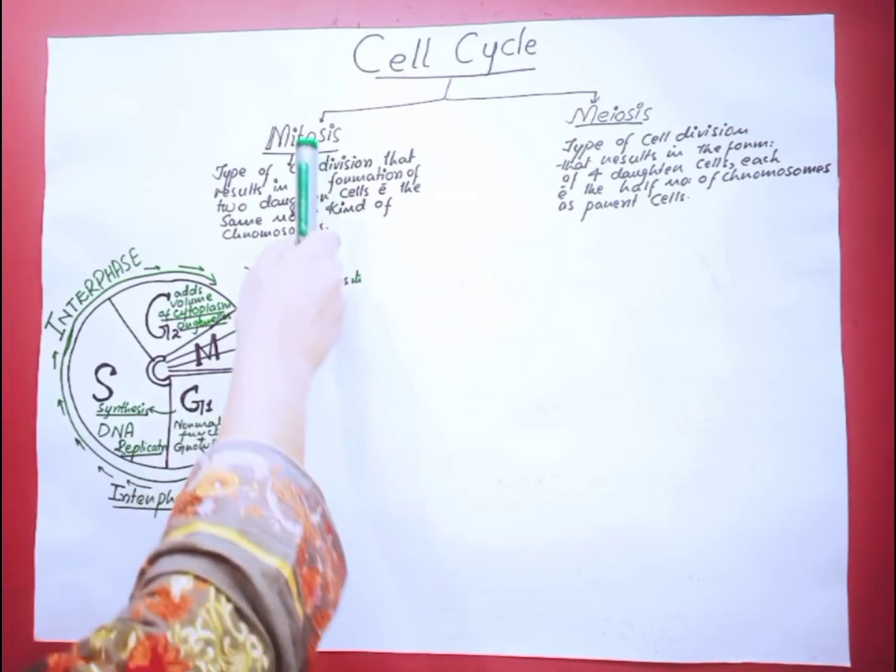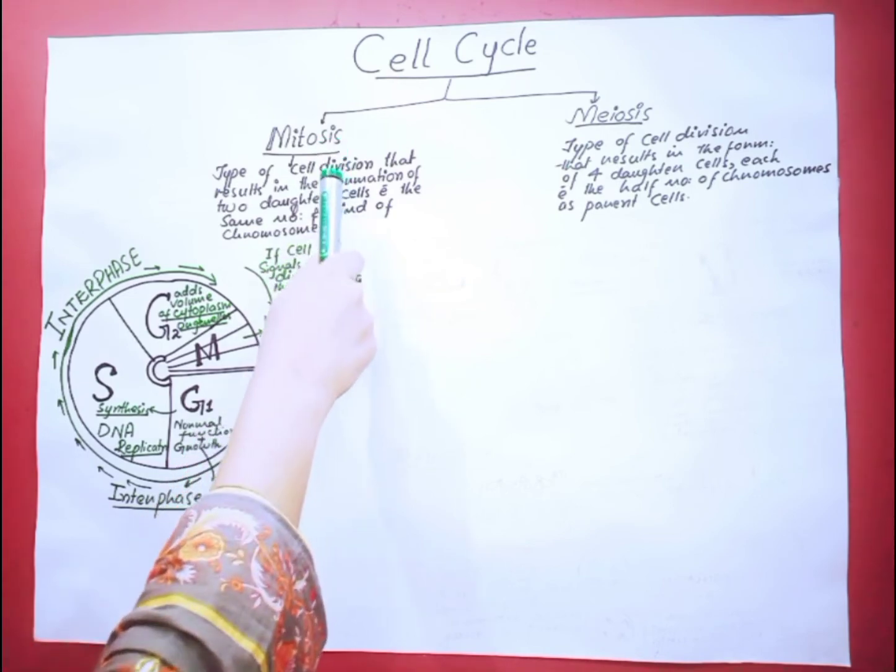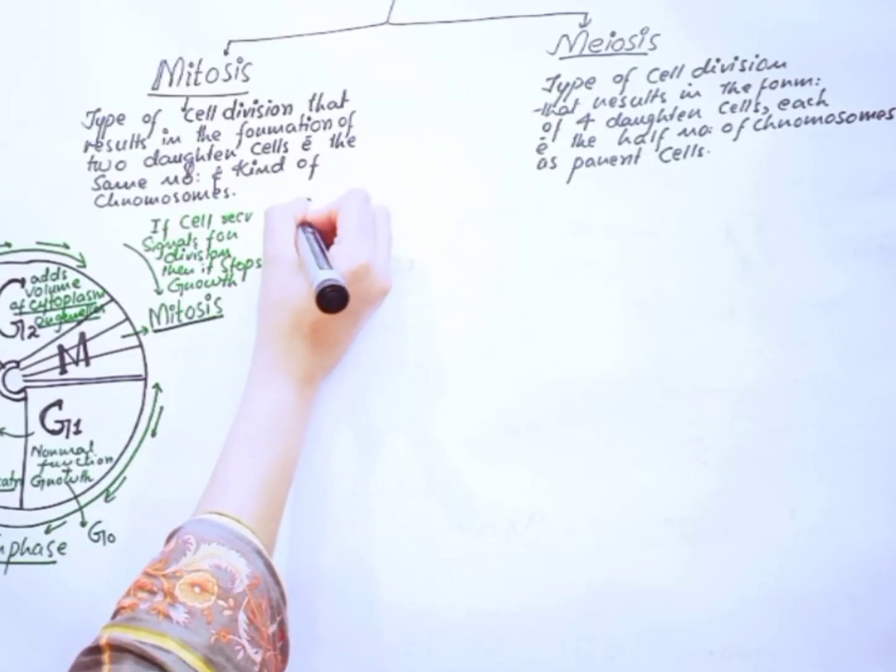There are four stages of this mitosis phase which are called prophase, metaphase, anaphase, and telophase. Let's discuss prophase.